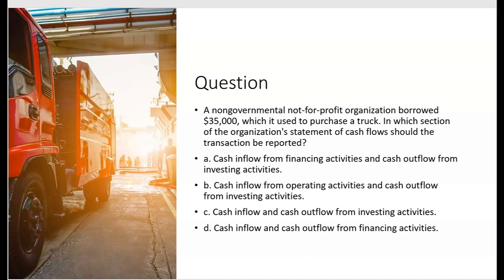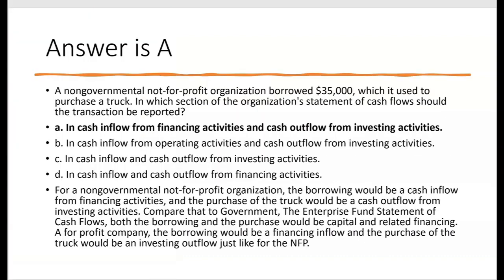A non-governmental not-for-profit borrowed $35,000, which it used to purchase a truck. In which section of the statement of cash flows should the transaction be reported? This is really two transactions: the borrowing of the $35,000 is a financing inflow, and the spending of that money to purchase the truck is an investing outflow. Letter A — cash inflow from financing, cash outflow from investing — is the correct answer. This is exactly the kind of question they're going to ask you on the exam.